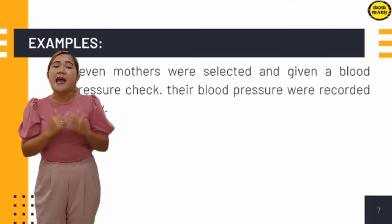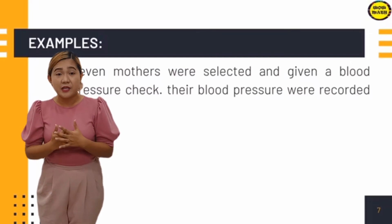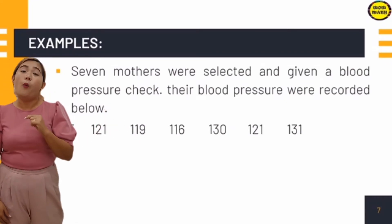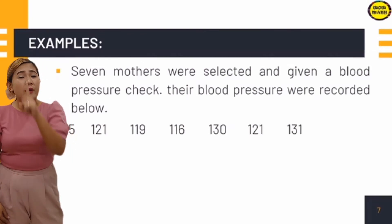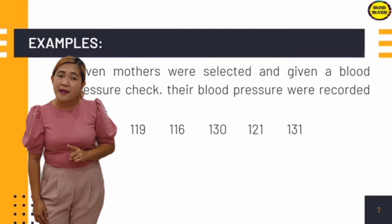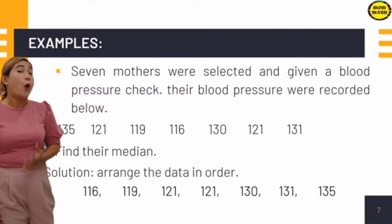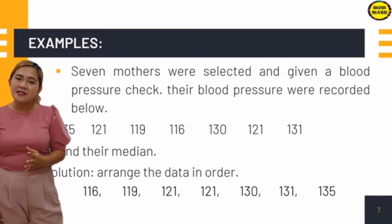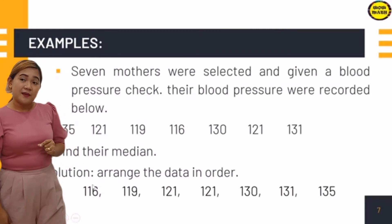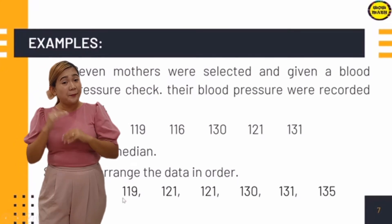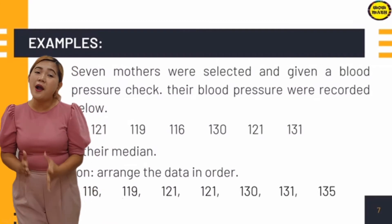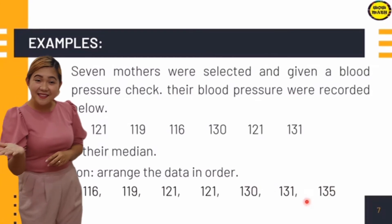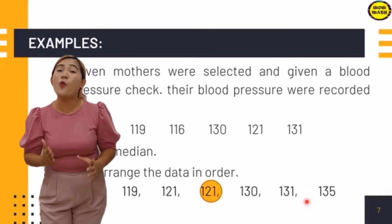Example: 7 mothers were selected and given a blood pressure check. Their blood pressures were recorded as: 135, 131, 119, 116, 130, 121, and 131. First, we arrange the data in order from least to greatest. Since we have an odd number of data points, we can easily locate the midpoint. Our median is 121.